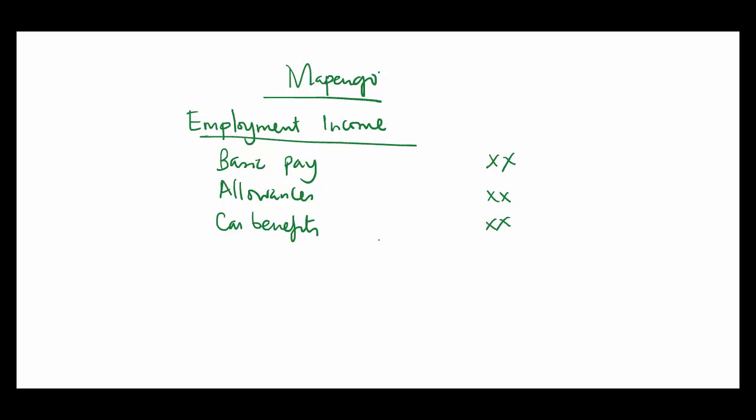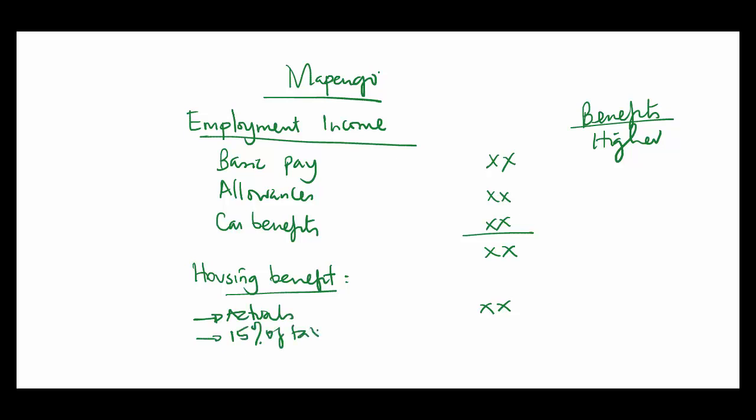Remember that with regards to employment income, the last benefit that we always consider is the housing benefit. So after you've done this, we now look at the housing benefit and then we add it here. With regards to benefits, when you're looking at your taxable income, always take the higher. If we're dealing with housing benefit, we'll be dealing with the actuals or 15% of taxable pay, which is basically this, so whichever is higher is what you would take.